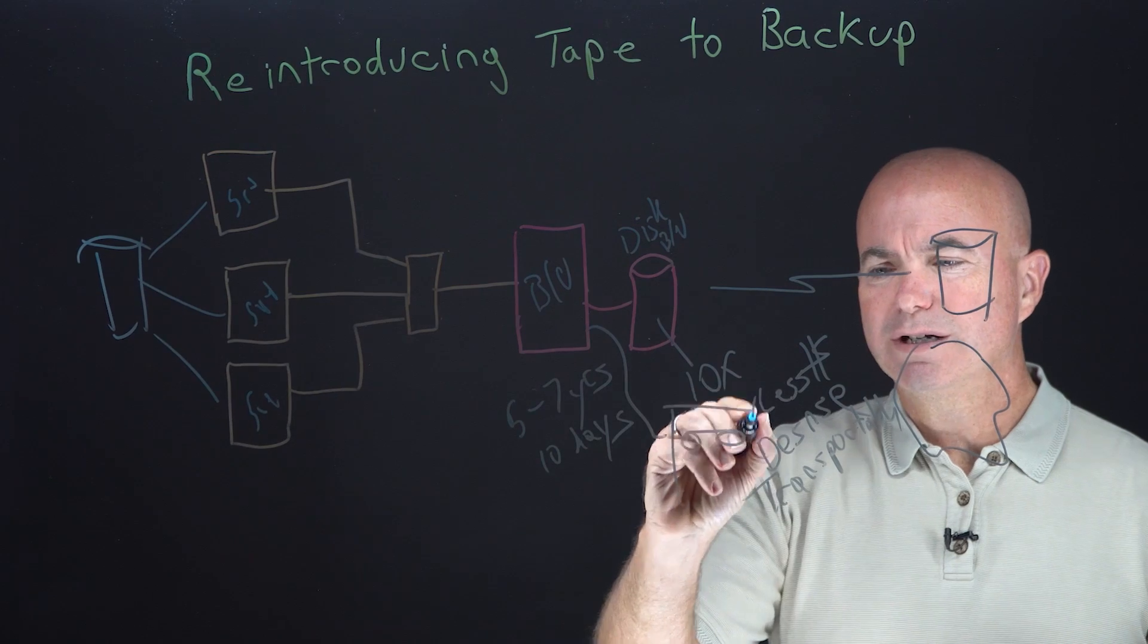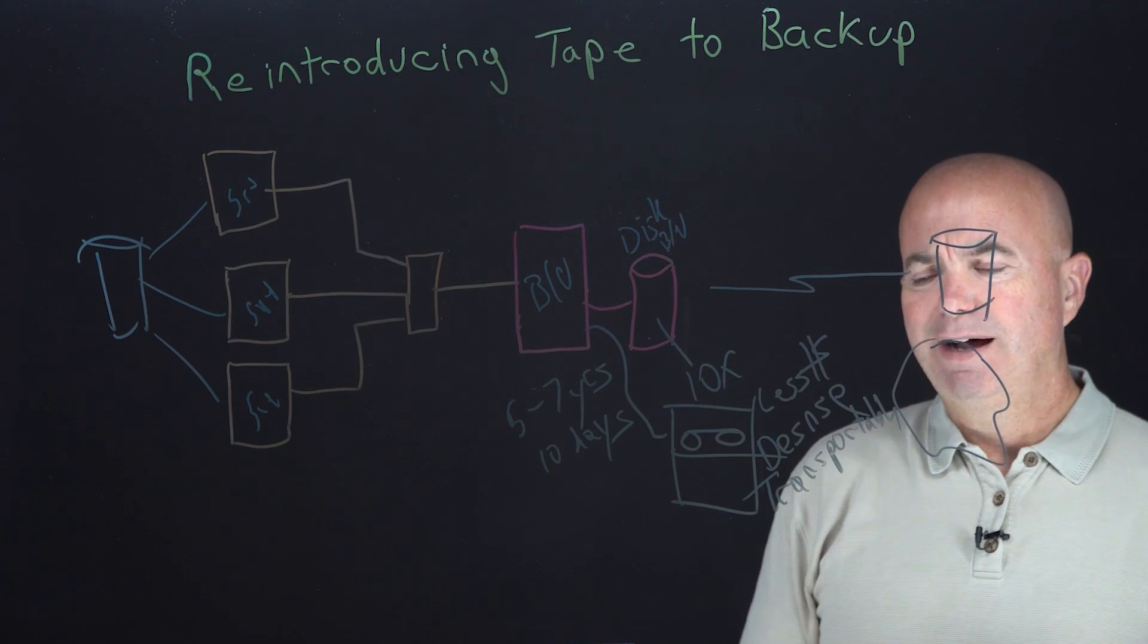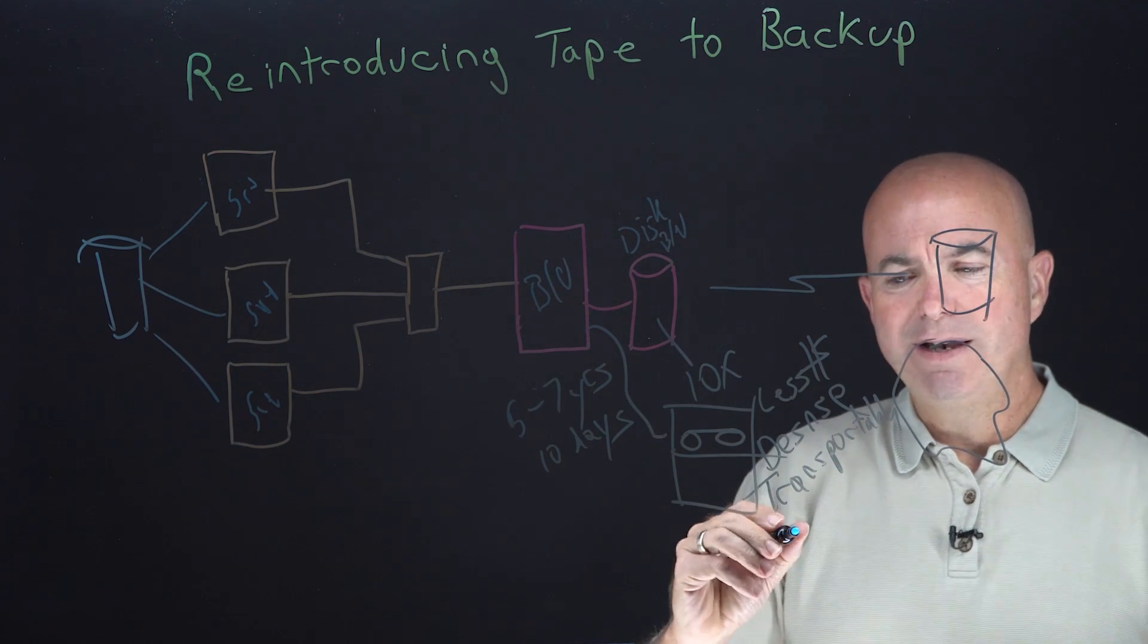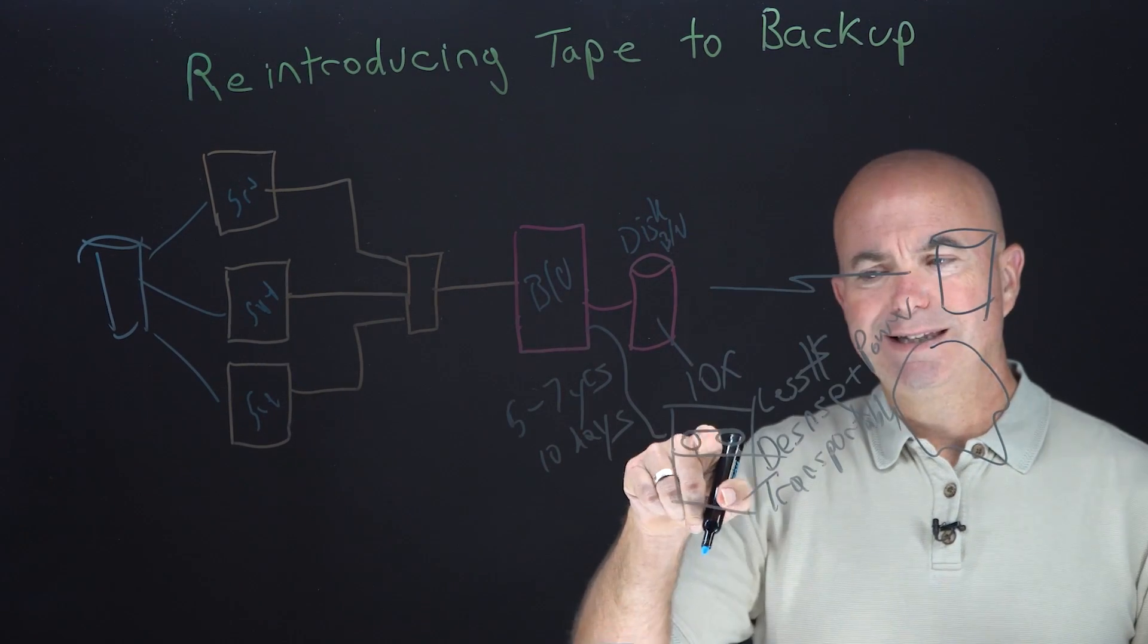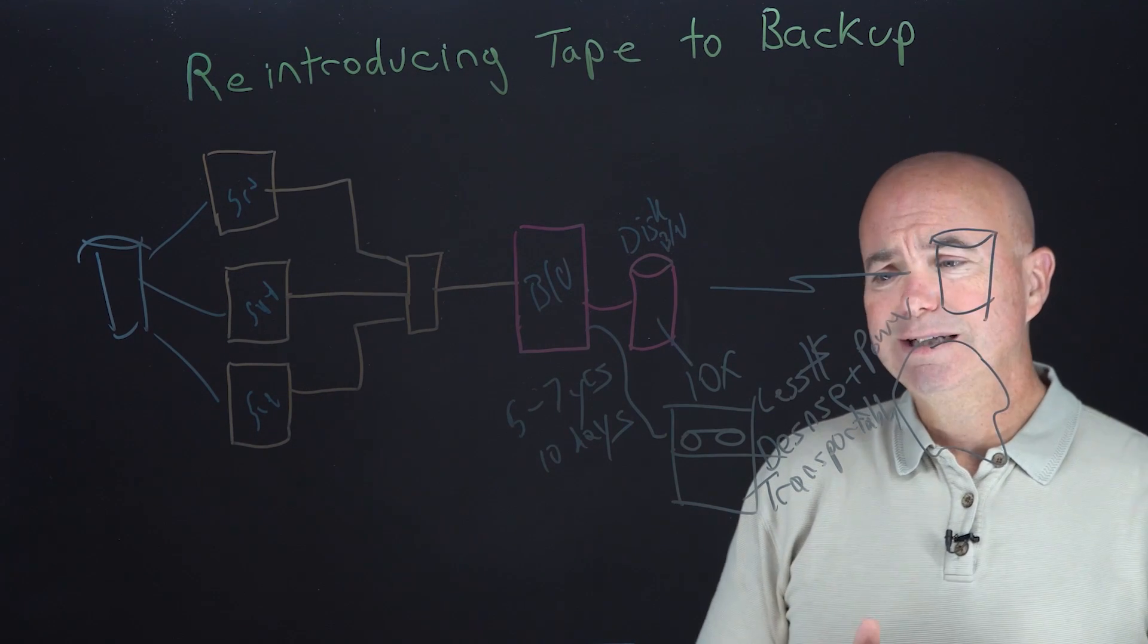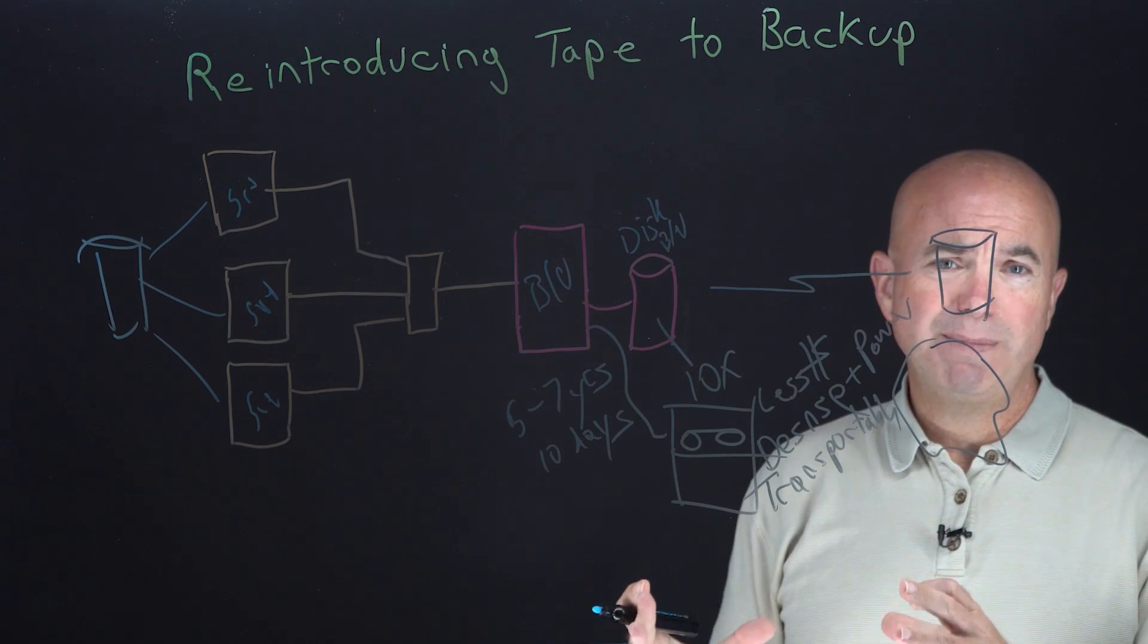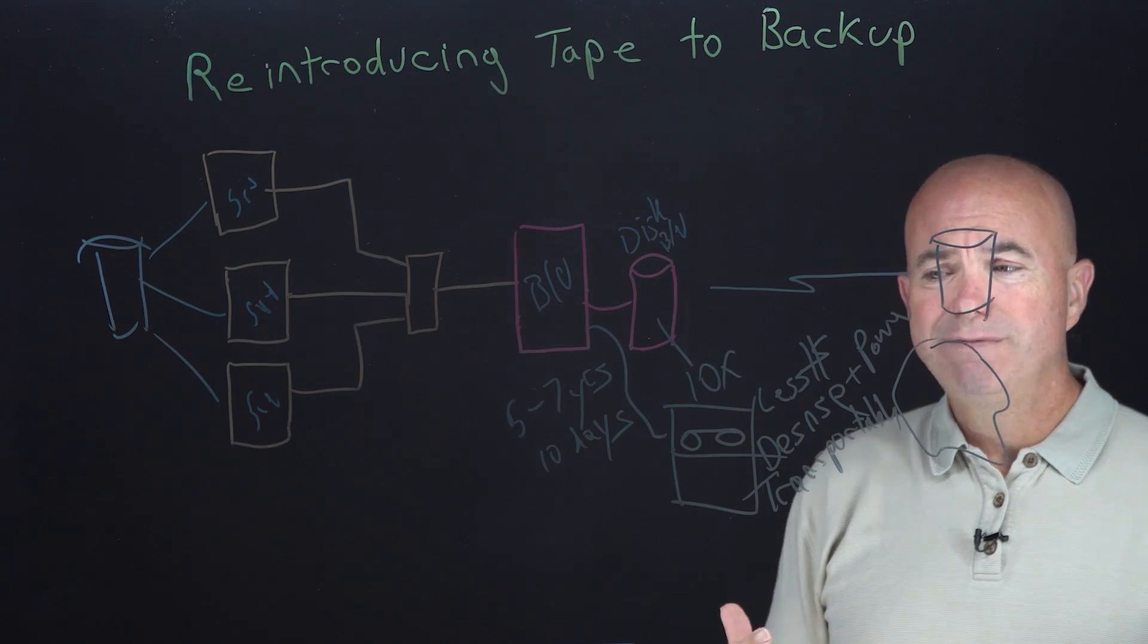From a cost perspective, there's literally no denying that tape is a less expensive medium, even less expensive than the cloud. From a density perspective, we can fit terabytes of data on a per cartridge basis. Another one that I forgot to mention is power. So the tape drive only uses power when it's actually writing data to it. Data tape on a shelf doesn't use any power at all. And from a transportability standpoint, all those terabytes of data that I have on a single cartridge can be FedExed anywhere I need to in the world.